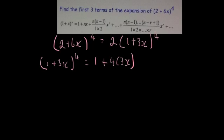And then the next term will be plus, it says n times n minus 1, so n is 4, so it's going to be n, which is 4, times 3, all divided by 1 times 2, so that's 1 times 2, which is 2,